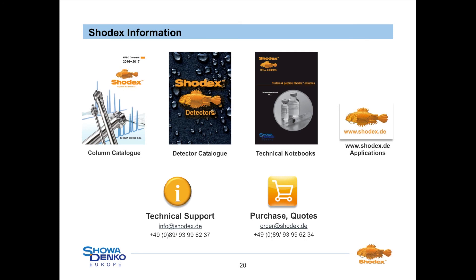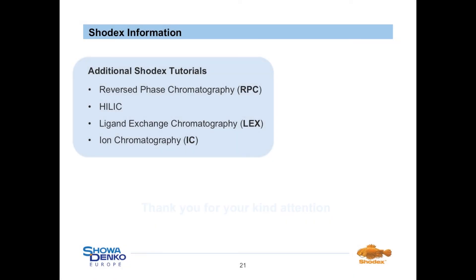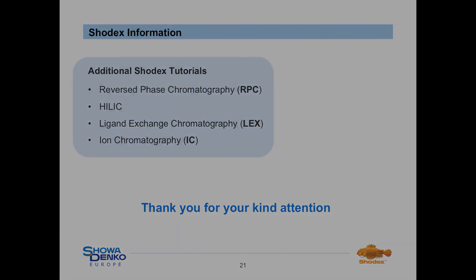If you need further information, please register on our new website www.shodex.de. There you can find PDF files for download, i.e. our column and detector catalogues, technical notebooks, and you have access to our application databank. In case you need support, please contact us via info@shodex.de. For quotes or purchase orders, please send us an email via order@shodex.de. Moreover, we offer further tutorials considering reversed phase, HILIC, ligand exchange and ion chromatography. Thank you very much for your kind attention.